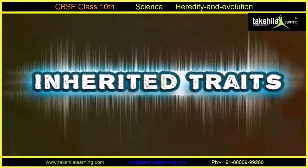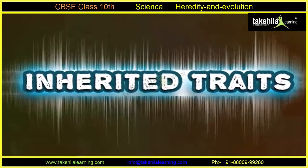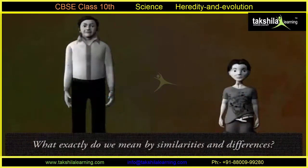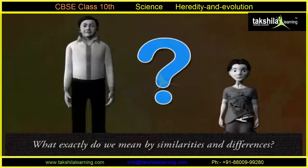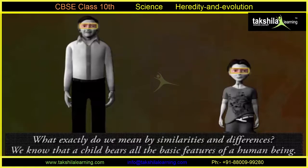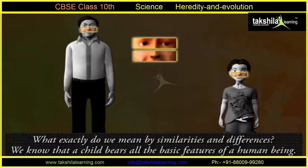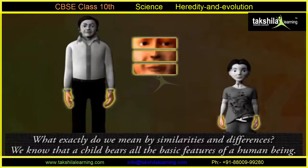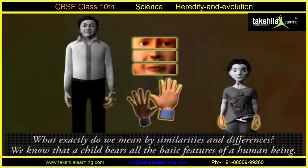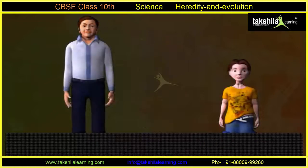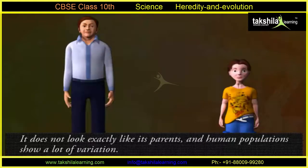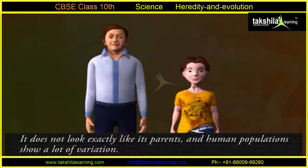Inherited Traits. What exactly do we mean by similarities and differences? We know that a child bears all the basic features of a human being. However, it does not look exactly like its parents, and human populations show a lot of variation.